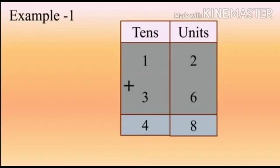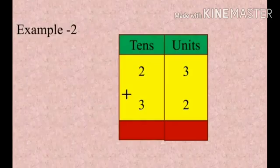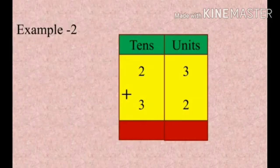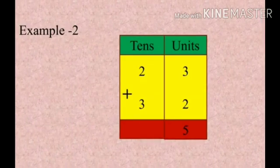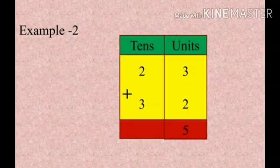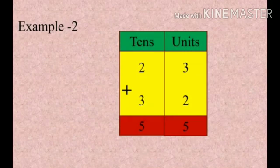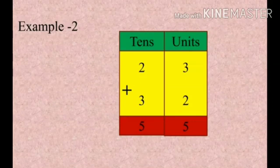Now next example: 23 plus 32. First, adding the numbers from the units place: 3 is the bigger number, so count 2 fingers after 3 — 4, 5. The answer is 5; write 5 in the units place. Then in the tens place, 3 is the bigger number, so count 2 numbers after 3 — 4, 5. The answer is 5. So we get 5 tens and 5 units, which means 55. 23 plus 32 is equal to 55.